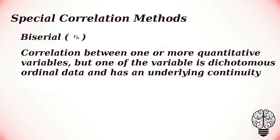Biserial is a correlation between one or more quantitative variables, but one of the variables is dichotomous ordinal data and has an underlying continuity. For example, depression level can be measured on a continuous scale but can be classified dichotomously as high or low.